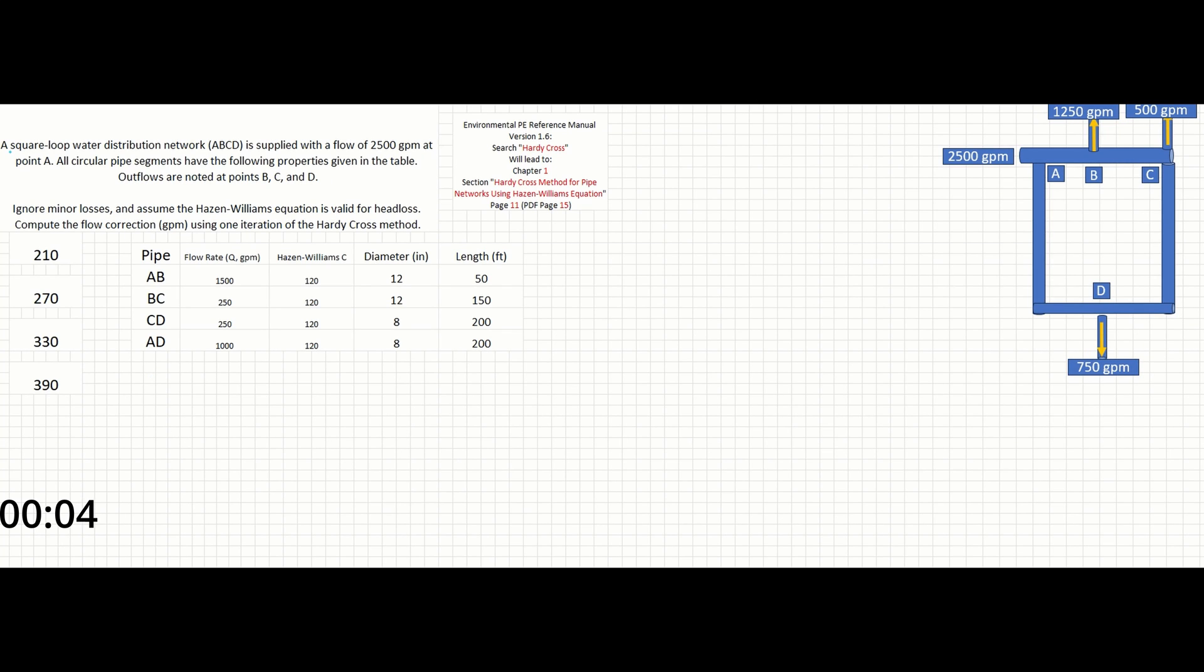In this problem, a square loop water distribution network ABCD is supplied with a flow of 2,500 gallons per minute at point A. All circular pipe segments have properties given in the table. Outflows are noted at points B, C, and D. Ignore minor losses and assume the Hazen-Williams equation is valid for head loss. Compute the flow correction in gallons per minute using one iteration of the Hardy Cross method.